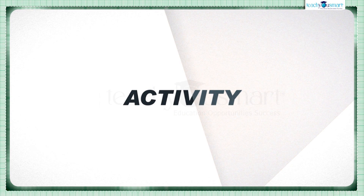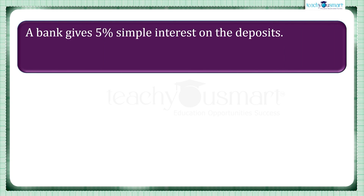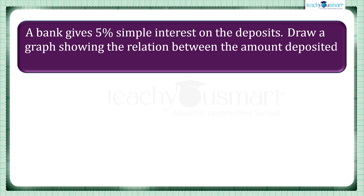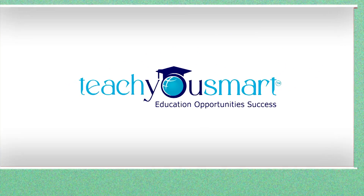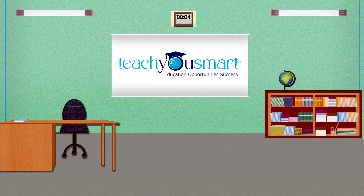Before winding up, let's check how much you understood by doing an activity. A bank gives 5% simple interest on the deposits. Draw a graph showing the relation between the amount deposited and the simple interest earned. Using the graph, find the investment for which one has to get an interest of 40 rupees. That's all for now — see you all in the next class.